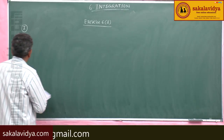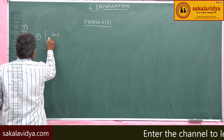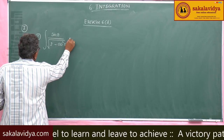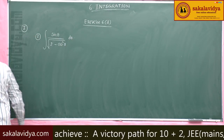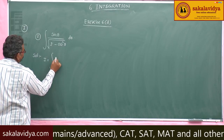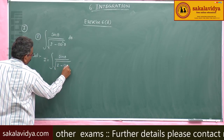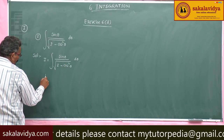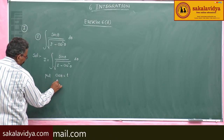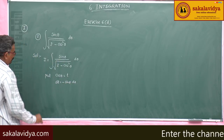Second problem: evaluate integral of sin θ by root of 2 minus cos² θ, dθ. Let us do this problem. I is equal to integral of sin θ by root of 2 minus cos² θ, dθ. Put cos θ equal to t; differentiating, dt equals minus sin θ dθ.